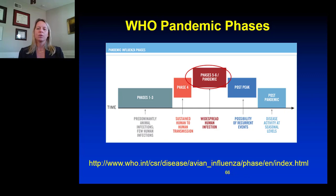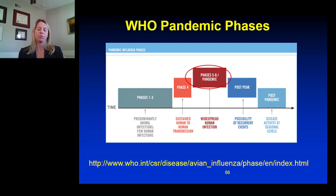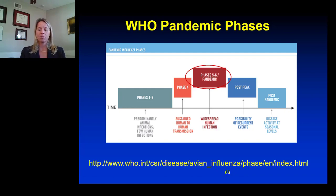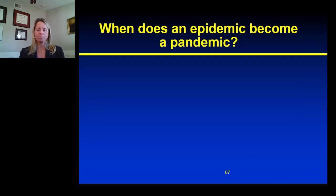However, as we know, even in the current season — every season — there is circulating flu that leads to human-to-human transmission. But it is of a flu strain that we're used to seeing, and for which we have the ability to vaccinate against.